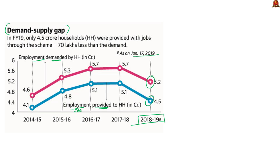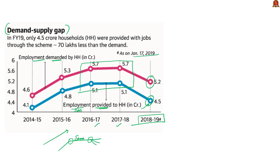Employment under MGNREGA is supposed to increase year on year, but the graph is similar for financial years 2016-17 and 2017-18. As only 2 months of data are unavailable for 2018-19, we can presume the full year value will be close to or below these two values. The demand-supply gap has widened marginally — meaning it has increased slightly — so there is a huge demand but this supply is not being met by the government.